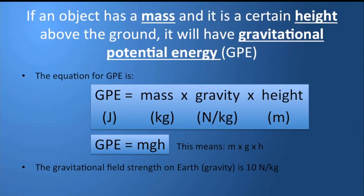To work out gravitational potential energy, you take the mass of the object times by the gravitational strength on the planet that you're on and multiply it by the height. Gravitational potential energy is mgh — mass times gravity times height. Make sure you convert your mass into kilograms and your height into meters. Gravity on earth is 10 newtons for every kilogram of mass, and using those units will make sure that the gravitational potential energy comes out in Joules. All energy is measured in Joules.